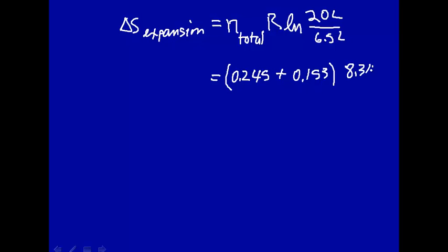R is 8.314 joule per mole kelvin, times the natural log of 20 over 6.5. And you plug all this into the calculator and you get 3.72 joule per kelvin.